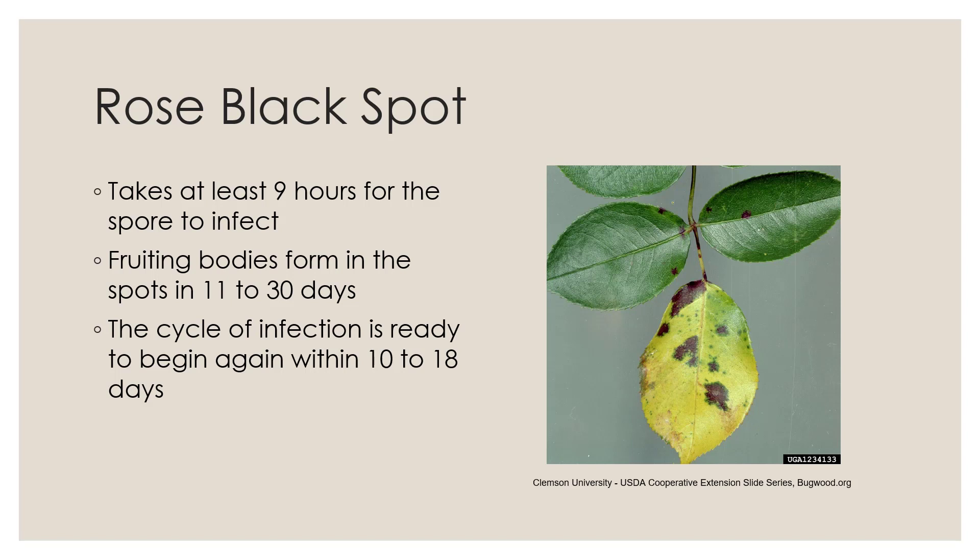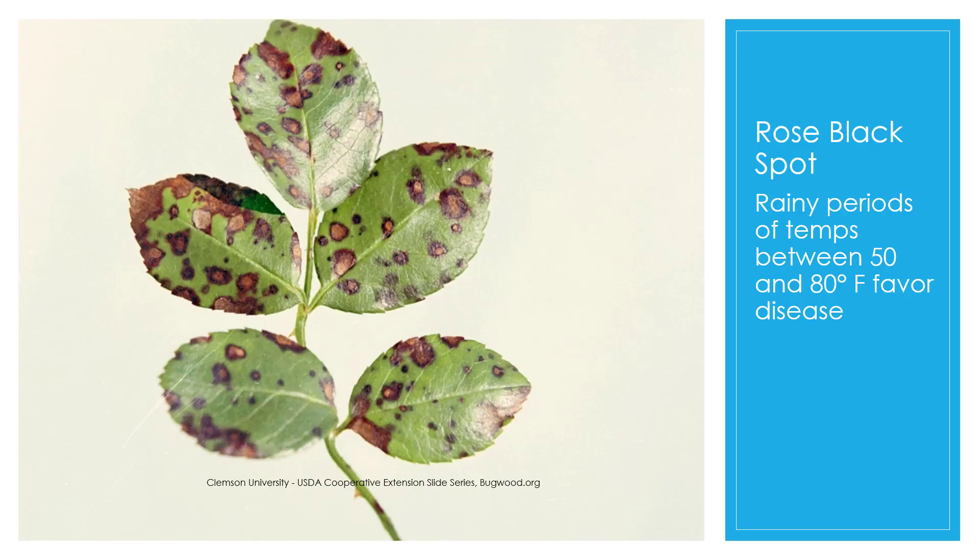One reason you hear not to water in the evening is that fungi need to stay on a surface to infect. For rose black spot, it takes at least nine hours for the spore to actually enter the leaf. Fruiting bodies form on spots from 11 to 30 days later, and the cycle is ready to begin again within 10 to 18 days — it's a never-ending cycle.